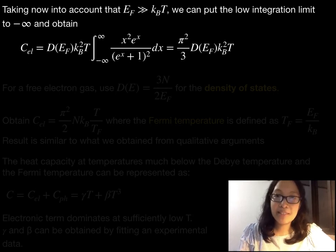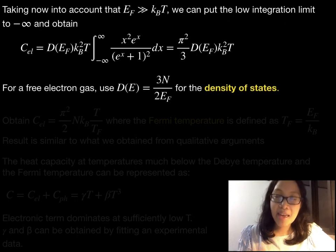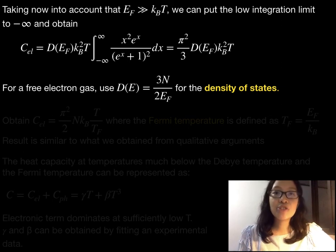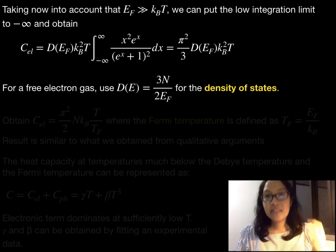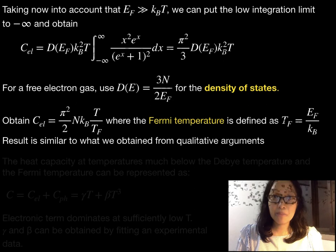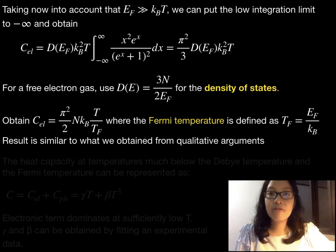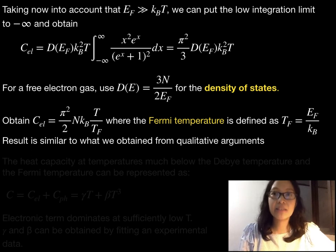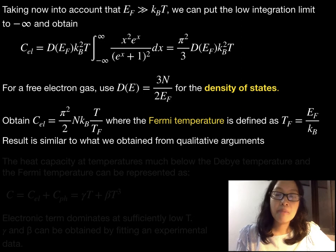Furthermore, the density of states for a free electron gas is 3N/2EF. The Fermi temperature of this electron gas is TF equals EF/kB and in agreement with what is obtained via qualitative argument. TF is not an actual temperature, but a convenient reference temperature.